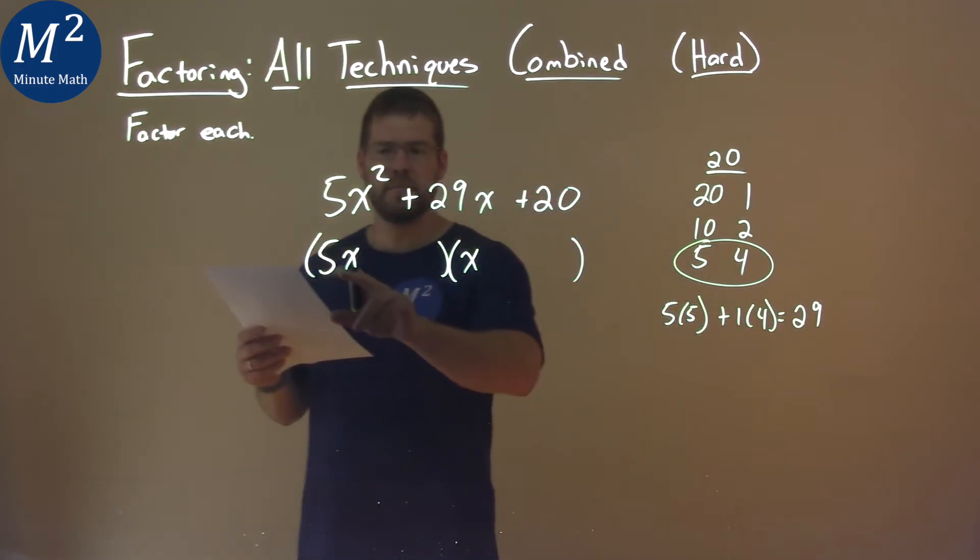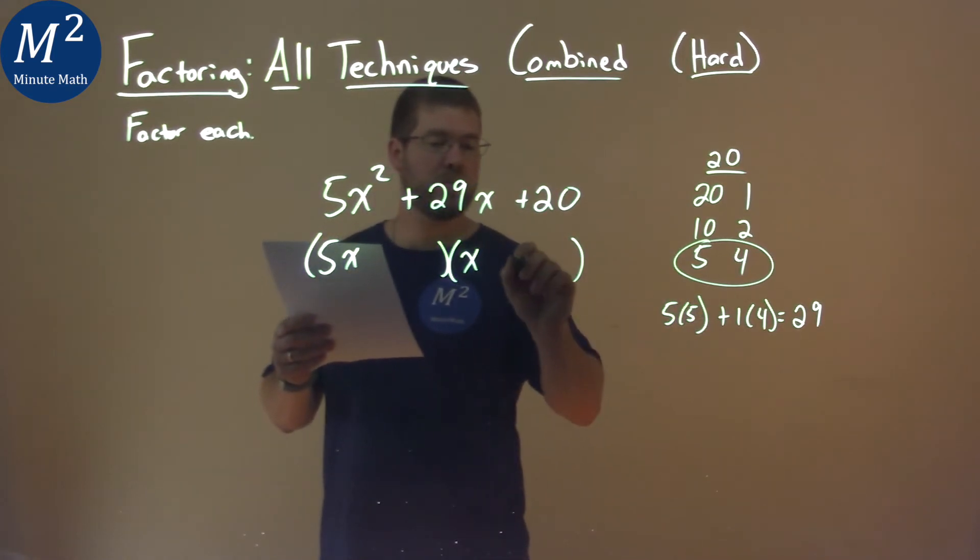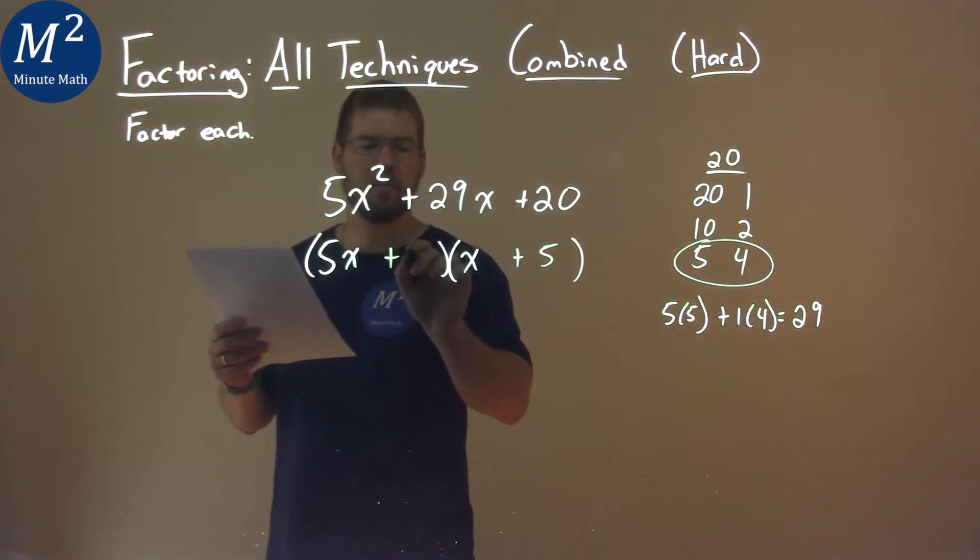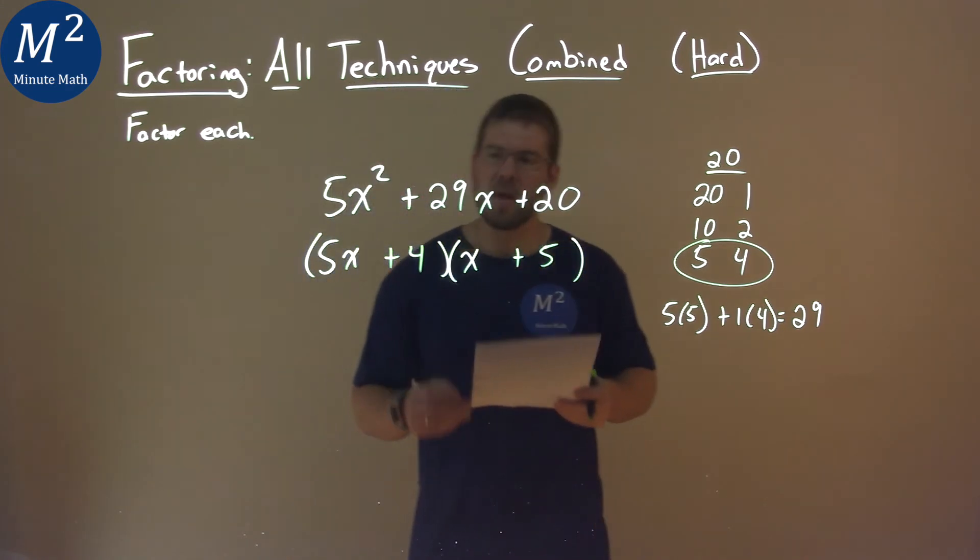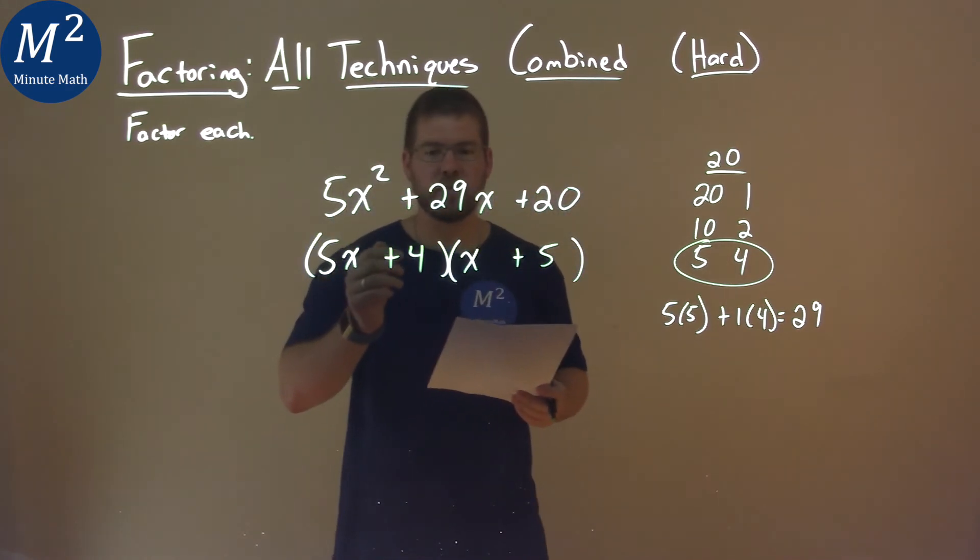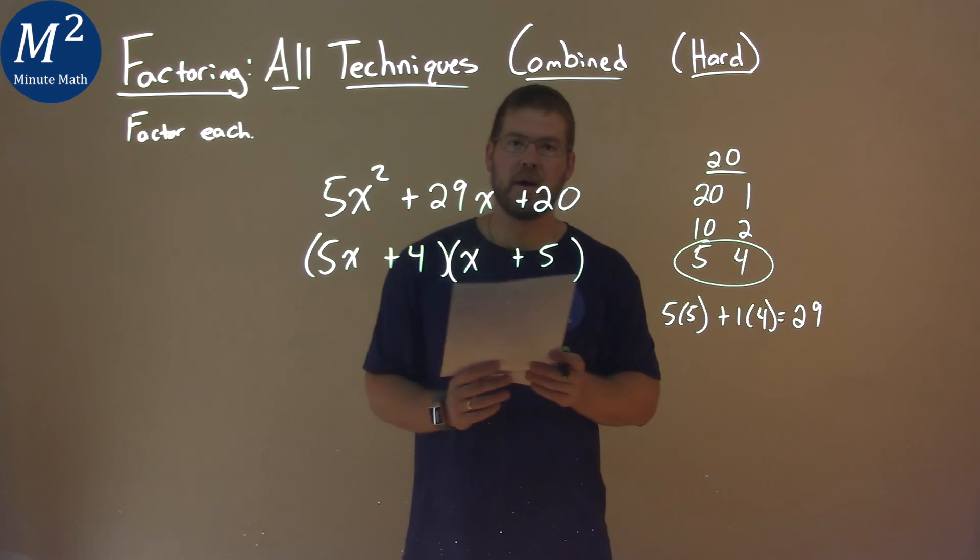So to match it up, 5 has to be multiplied by the 5, so put the 5 on this side. 4 by the 1, put the 4 here. And so our final answer is 5x plus 4 times x plus 5.